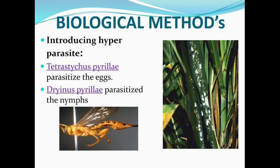There are some biological methods to control the pest. First is introducing hyperparasites: Tetrastichus pyrillae that parasitize the eggs, and Rhinospora pyrillae that parasitize the nymph. Thank you.